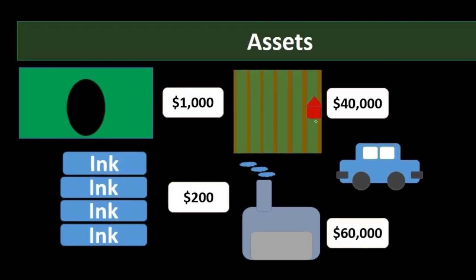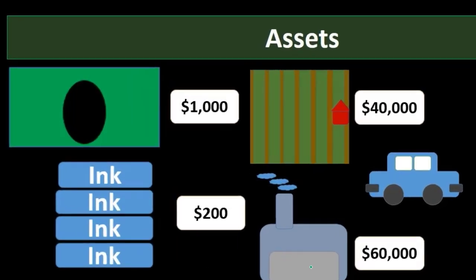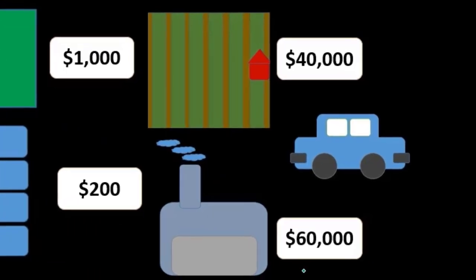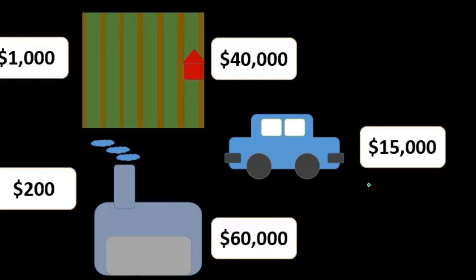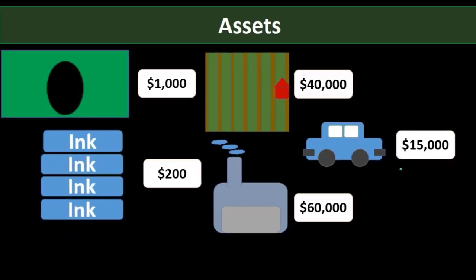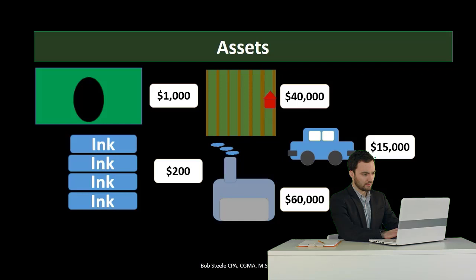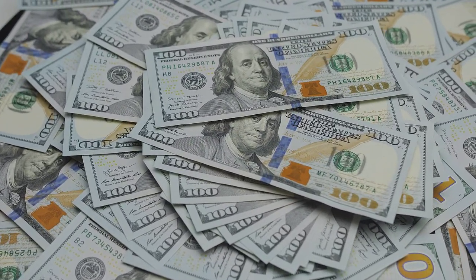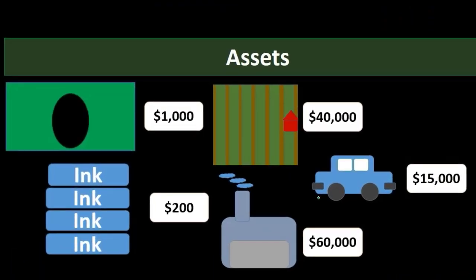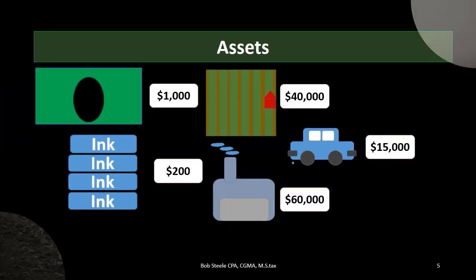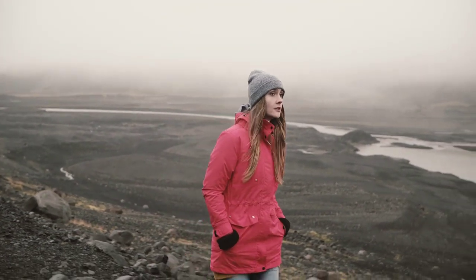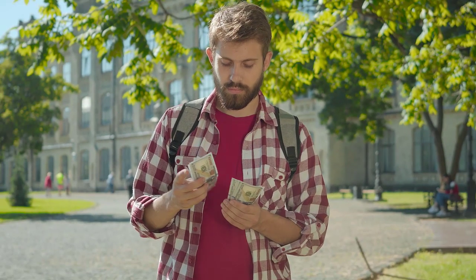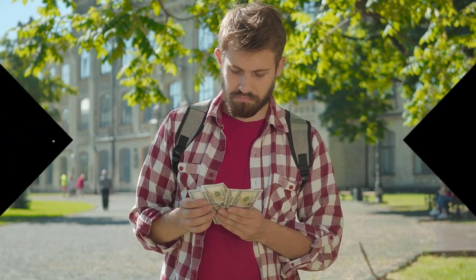Everything must be reported in dollars. Land is reported as $40,000, not as a number of acres. A building is reported as $60,000, not as 'one building,' and a car as $15,000. When we add up all the assets in dollar terms, we must recognize that we don't actually have all those dollars in hand — to get them, we'd have to sell the assets. Therefore, we need to consider how much cash we have to pay off current obligations.